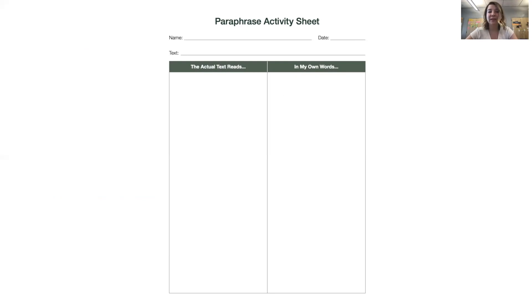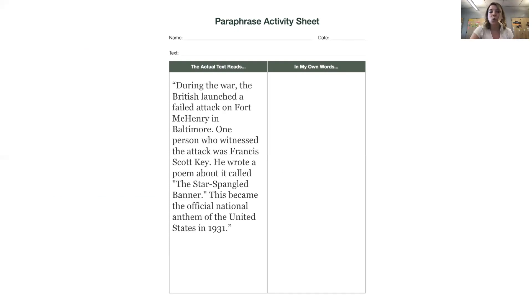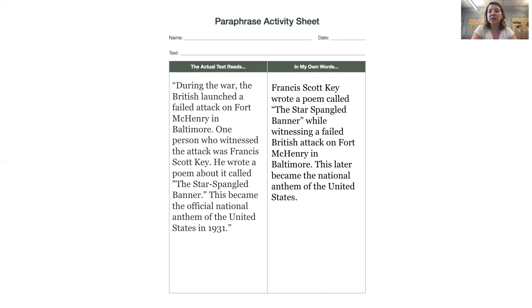Now it's your turn. Here's an actual quote from the text: During the war, the British launched a failed attack on Fort McHenry in Baltimore. One person who witnessed the attack was Francis Scott Key. He wrote a poem about it called The Star-Spangled Banner. This became the official national anthem of the United States in 1831. Go ahead and pause the video here. This time you're going to write it down — either on your paraphrase activity sheet, on a separate piece of paper, or in your social studies notebook. Go ahead and paraphrase this quote. Nice job, historians. Let's see how I did it: Francis Scott Key wrote a poem called The Star-Spangled Banner while witnessing a failed British attack on Fort McHenry in Baltimore. This later became the national anthem of the United States.